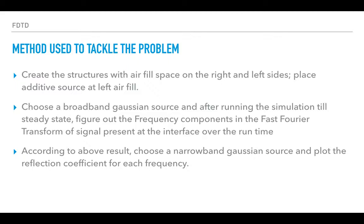We choose a broadband Gaussian source and run the simulation until steady state. Then we take the interface, figure out how the electric field has behaved throughout the steady state, and take the frequency components.